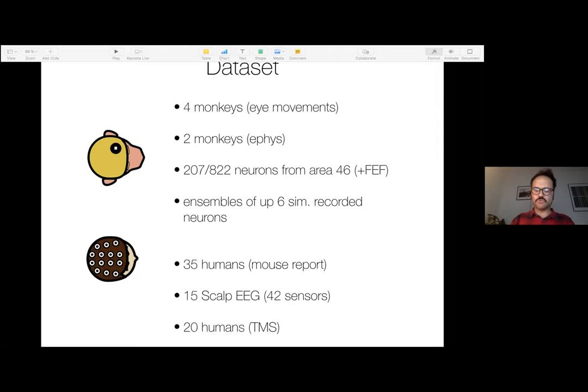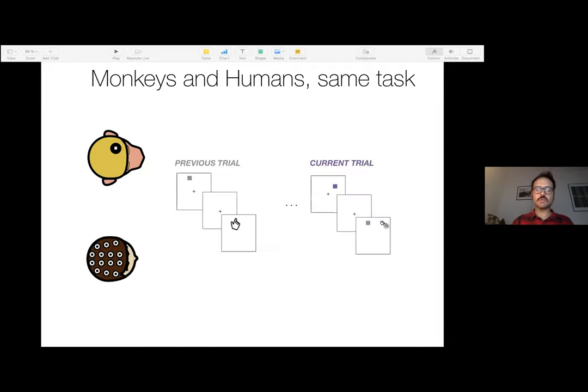I don't have much time to go into the details, but we are going to focus on single units from monkey PFC and EEG from humans. And both species will be performing the very similar task. So it's the same task introduced in the beginning, but in particular, we're going to focus on consecutive trials. And of course, during this, what happens in between this trial. So when the information about the previous trial continues until the current trial interferes.